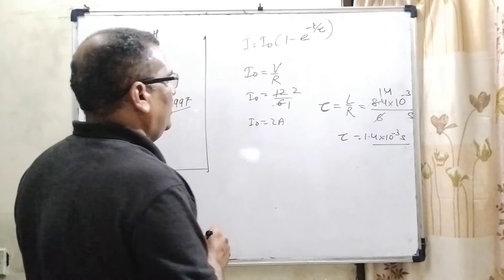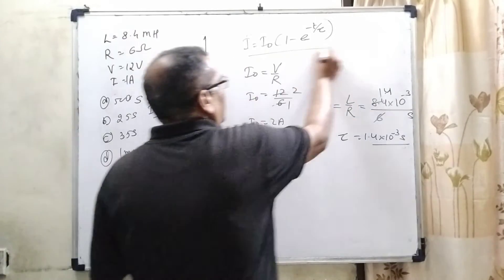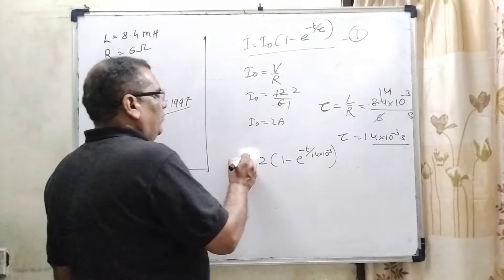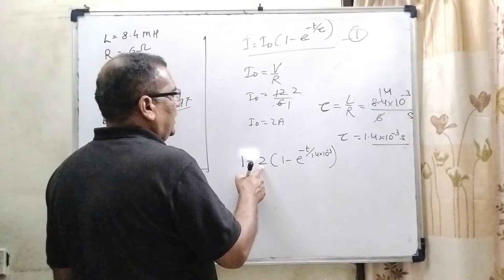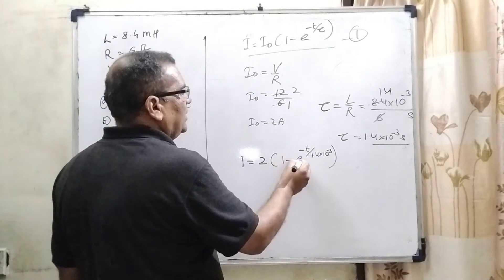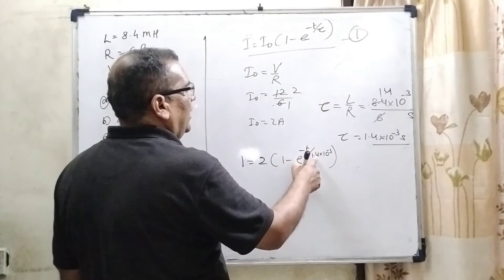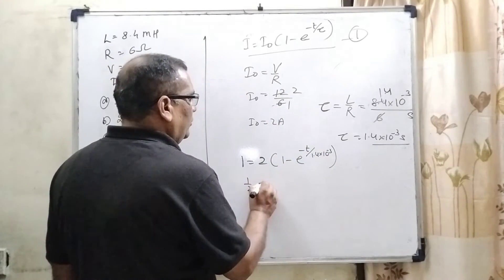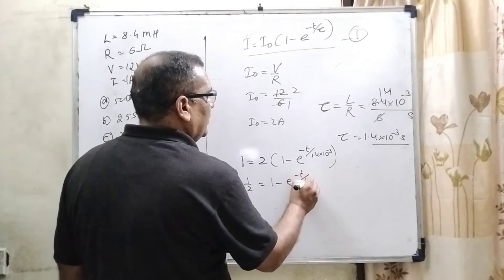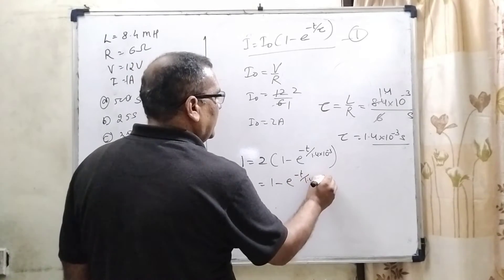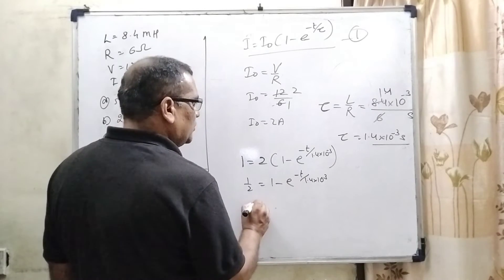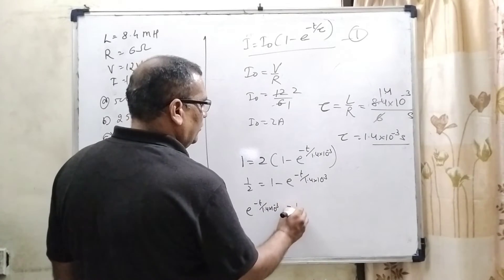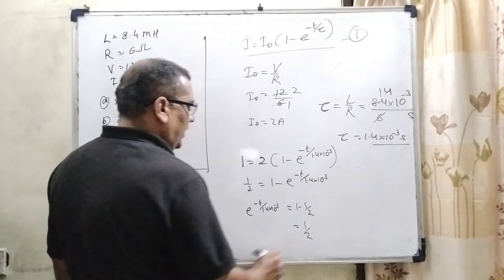So, here we get I0 and tau. Now, substitute in equation number first. We substitute all values: 1 ampere equals 2 times 1 minus e minus t divided by 1.4 into 10 raised to power minus 3. Here, 1 by 2 equal to 1 minus e raised to power minus t by 1.4 into 10 raised to power minus 3. Transposing, e raised to power minus t by 1.4 into 10 raised to power minus 3 equal to 1 minus 1 by 2, that becomes 1 by 2.